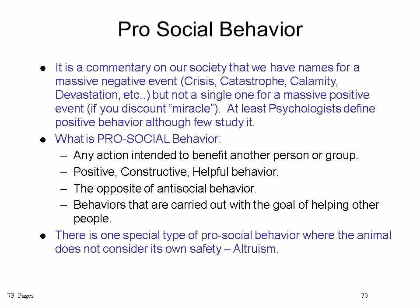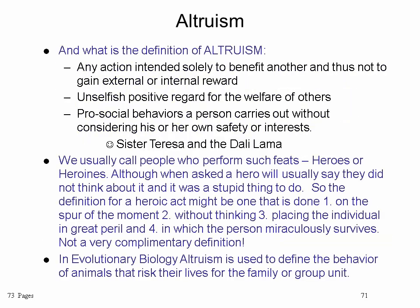It's a commentary on our society that we have so many names for massive negative events — crisis, catastrophe, calamity, devastation — but only one word to define a massive positive event, and that is 'miracle.' Psychologists do define positive behavior, calling it pro-social behavior: any action intended to benefit another person or group. It is positive, constructive, and helpful behavior — the opposite of anti-social behavior — carried out with the goal of helping other people.